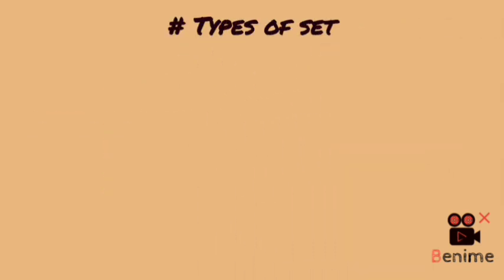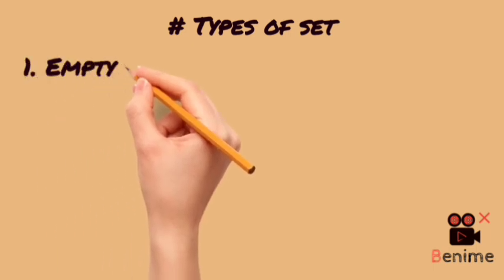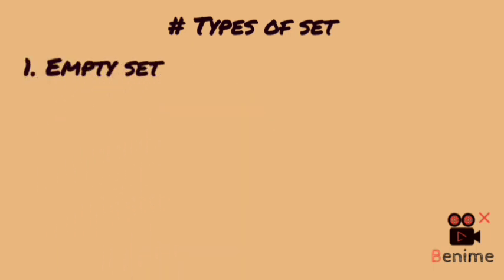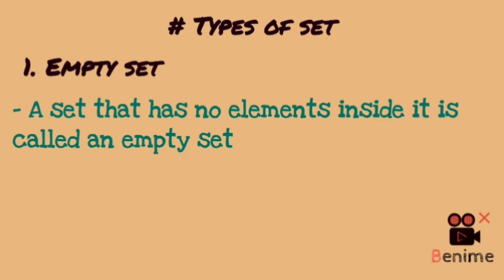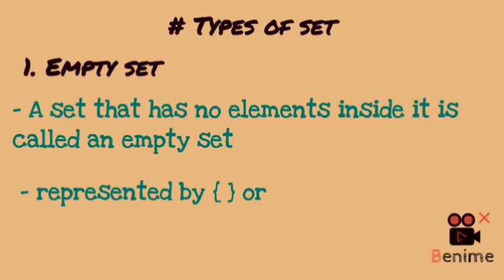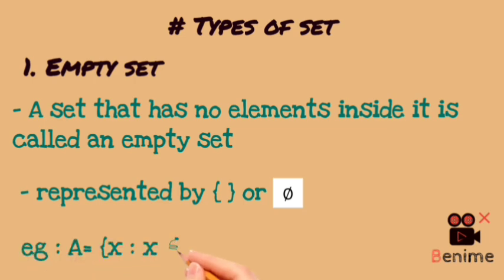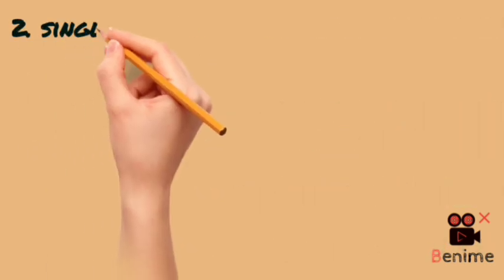Now we have types of sets. The first type is the empty set — a set in which there is no element. We represent it using the symbol ∅ or empty curly braces {}. For example, {x ∈ N | 2 < x < 3} — there is no natural number between 2 and 3, so this is an empty set.